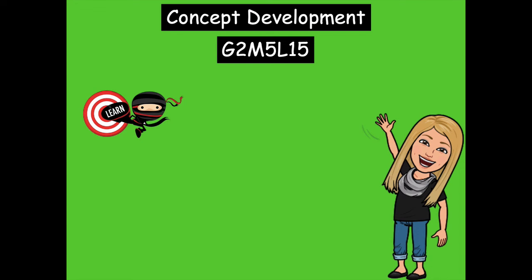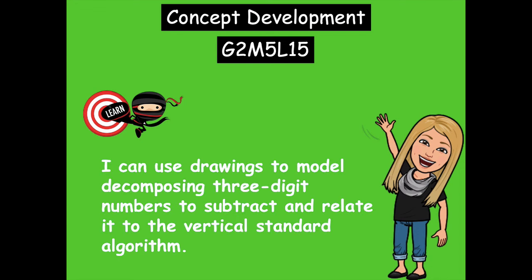For our lesson today, we're going to continue working with modeling our subtraction on our place value chart and relating it to the vertical form, just as we did in our previous lesson. Our learning goal says I can use drawings to model decomposing three-digit numbers to subtract and relate it to the vertical standard algorithm.